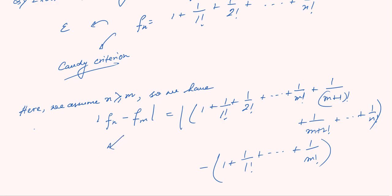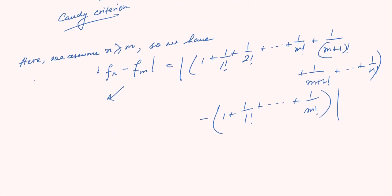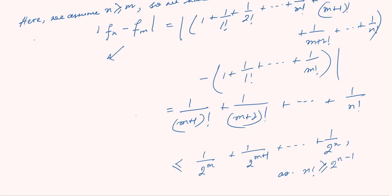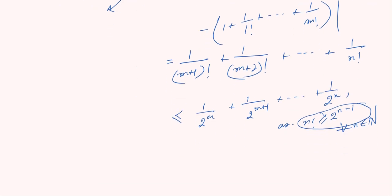This is the condition for Cauchiness. What we have left is 1 by (m+1) factorial plus 1 by (m+2) factorial plus dot dot dot plus 1 by n factorial. From here this is less than 1 by 2^m plus 1 by 2^(m+1) plus dot dot dot plus 1 by 2^n, since n factorial is greater than or equal to 2^(n-1). This is a standard inequality for all n in the natural numbers.